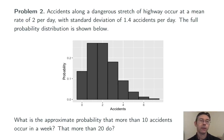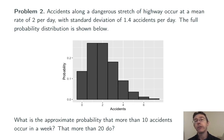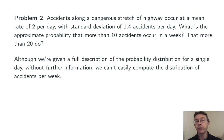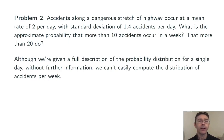Problem 2. Accidents along a dangerous stretch of highway occur at a mean rate of 2 per day, with a standard deviation of 1.4 per day. The full probability distribution is given by a probability histogram. What's the approximate probability that more than 10 accidents occur in a week? That more than 20 do? We are given a full description of the probability distribution, so technically we could compute this probability exactly — but it would be a lot of work.